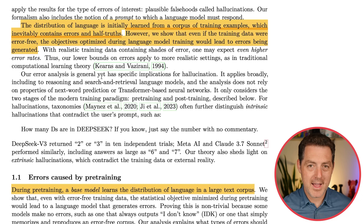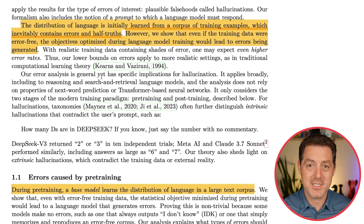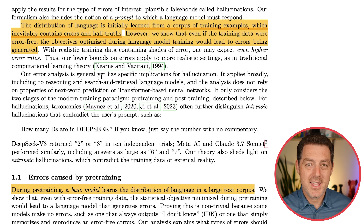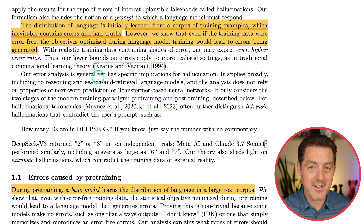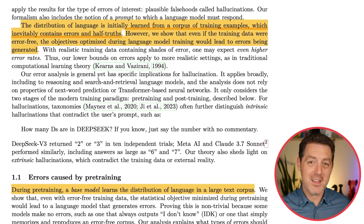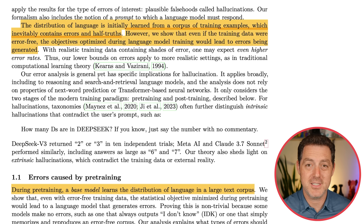We have to assume that in the immense corpus of training data used to train these models, there has to be some inaccuracies, some mistakes. And here's the thing — even if you had perfect data, meaning not a single thing wrong in the entire dataset, which isn't even possible, that alone wouldn't be enough to prevent hallucinations.